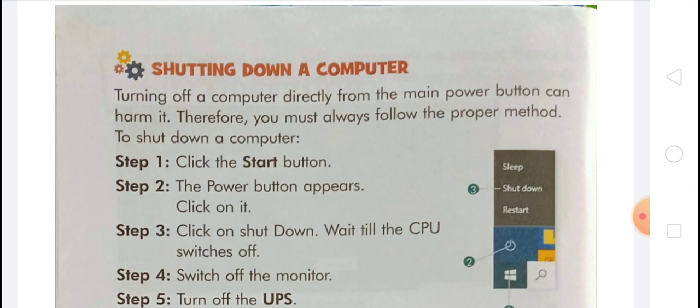In step 2, you have to turn on the Uninterrupted Power Supply, that is called UPS. In step 3, you have to press the power button on the CPU box. In step 4, you have to switch on the monitor. When a screen appears on the monitor, this screen is called a desktop. It indicates that a computer is ready to use.